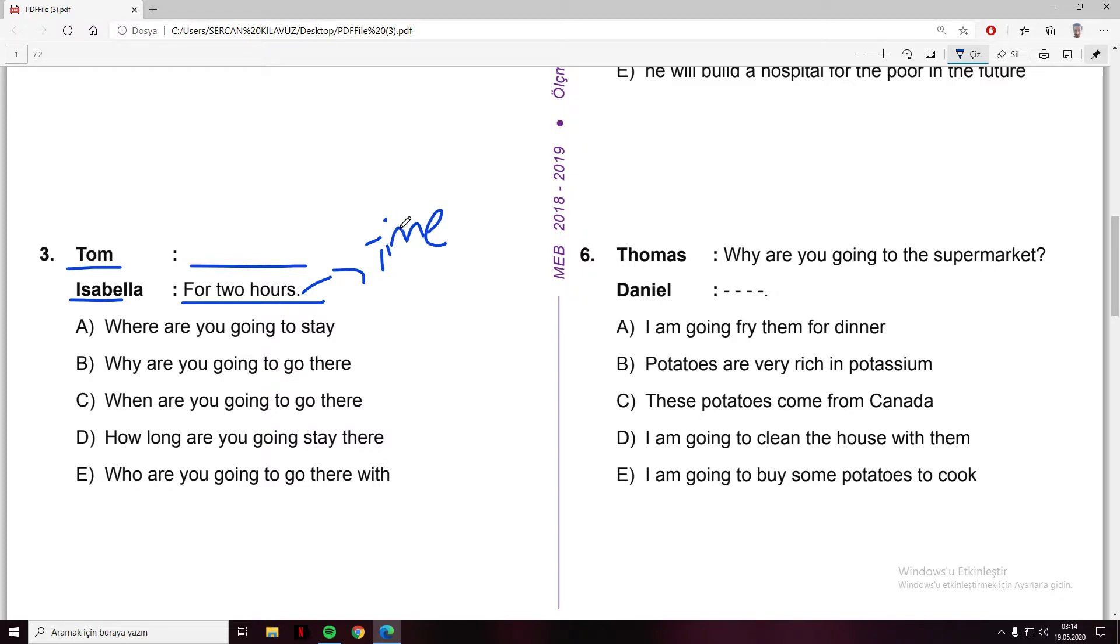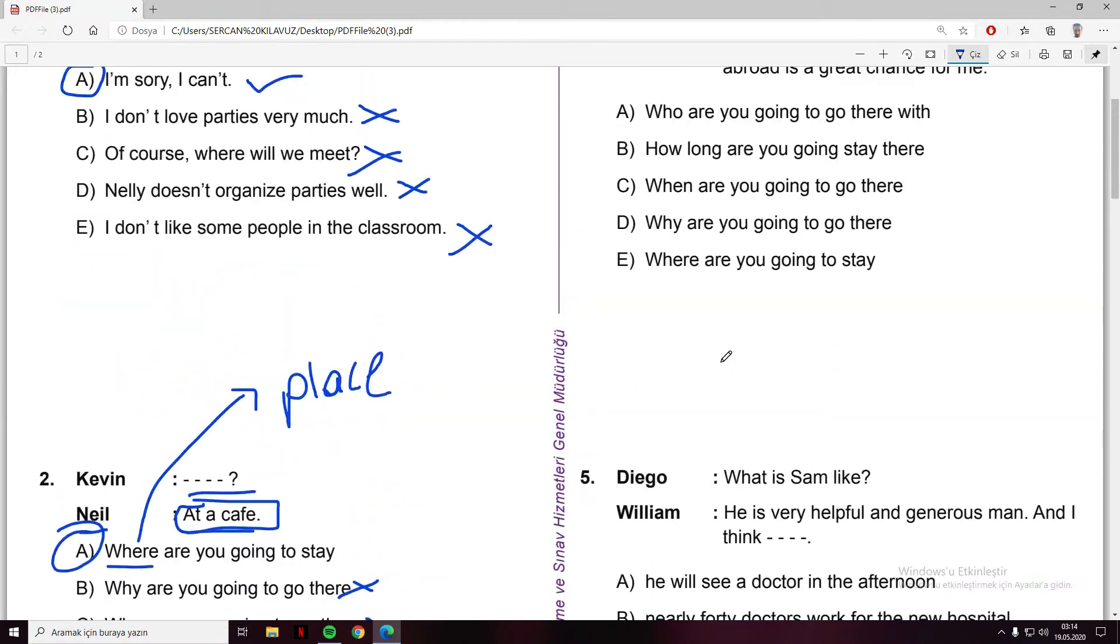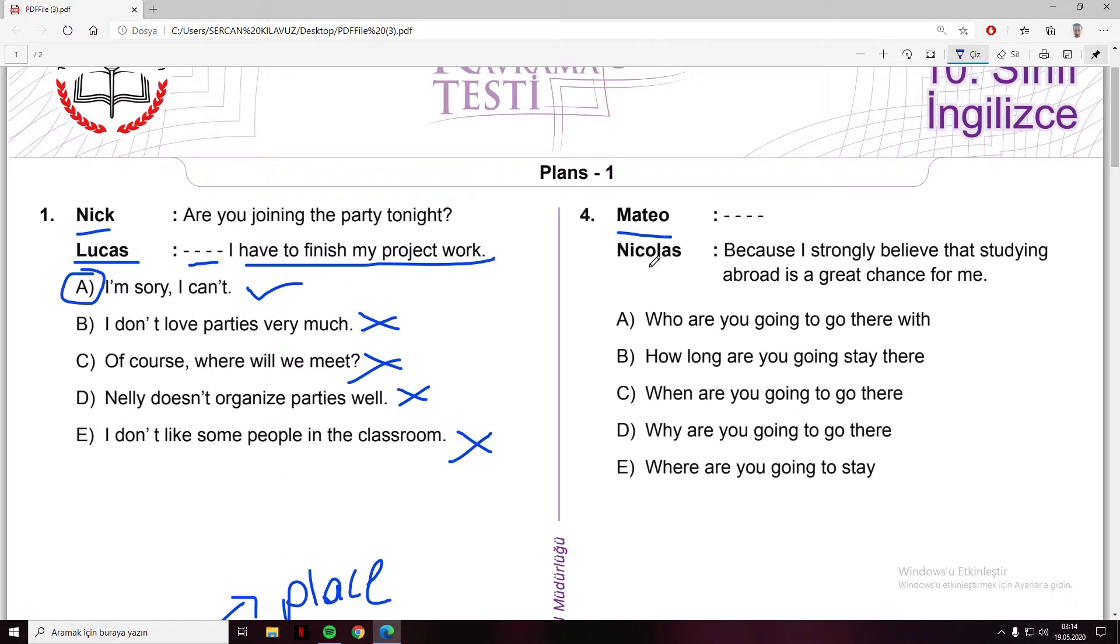We should ask the question for two hours - it means a period. We should use how long. Where are you going to stay - no. Why are you - no. When - no. How long - yes. How long are you going to stay there? For two hours. It's so easy.